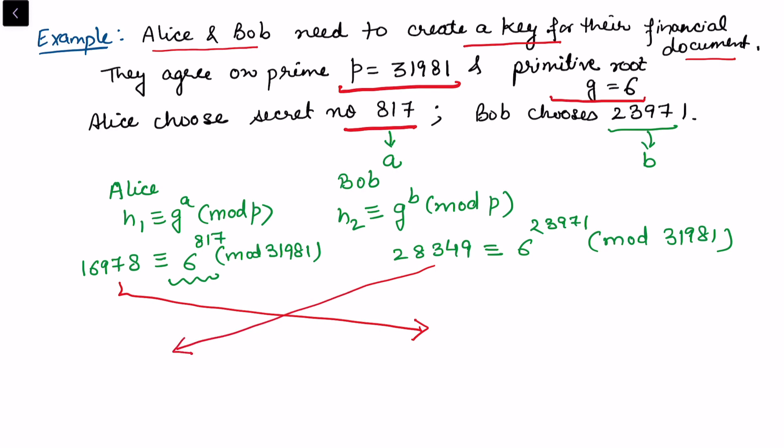Alice calculates k, which is congruent to h2 raised to power a, because a is already available with Alice. Alice has not declared what is a, and Bob has not declared what is b. This information is not public. We have h2, 28349, raised to power 817, and this is 7857 with respect to mod 31981.